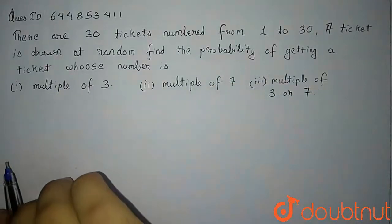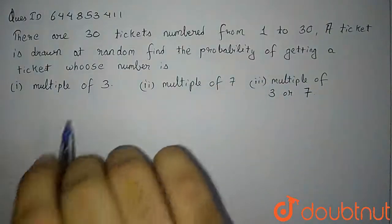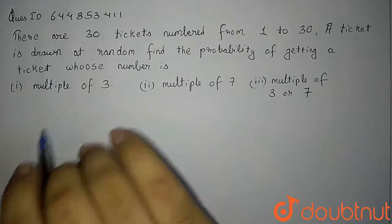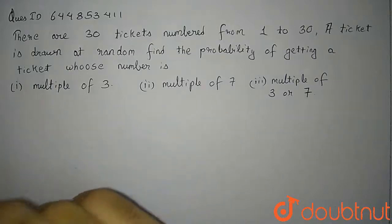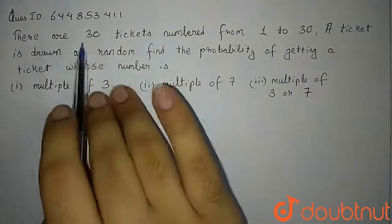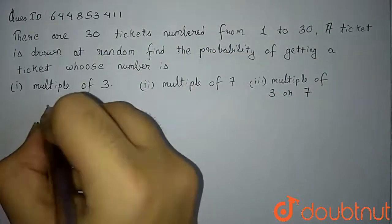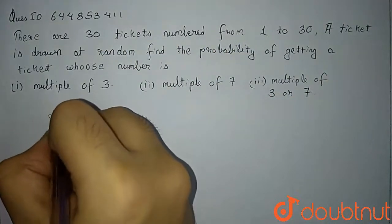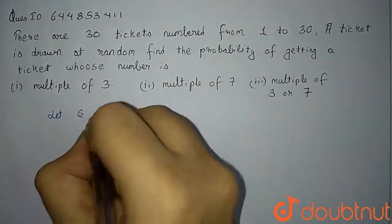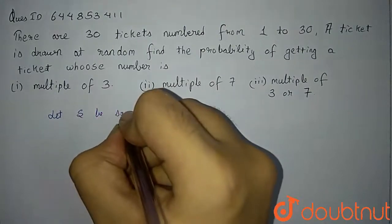In this question, we have to calculate the probability of this event. Let us first understand what is the sample space of this event. It is given that there are 30 tickets numbered from 1 to 30.